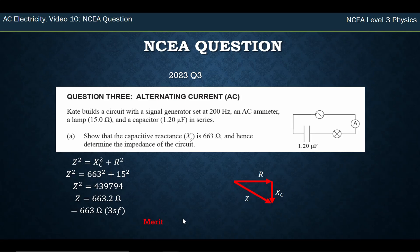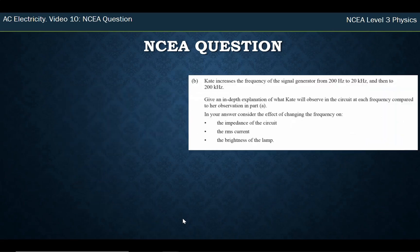So that was the first question, and it was worth a merit. Kate increases the frequency of the signal generator from 200 Hz to 20 kHz — that's 20,000 Hz — and then to 200 kHz, that's 200,000 Hz. Give an in-depth explanation of what Kate will observe in the circuit at each frequency compared to her observation in part A. Consider the effect of the changing frequency on impedance, the current, and the brightness.